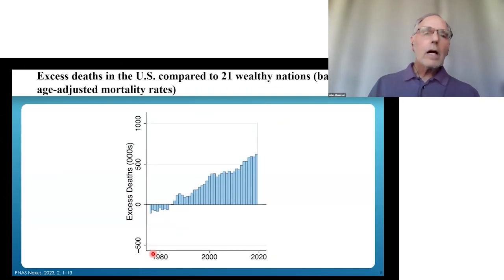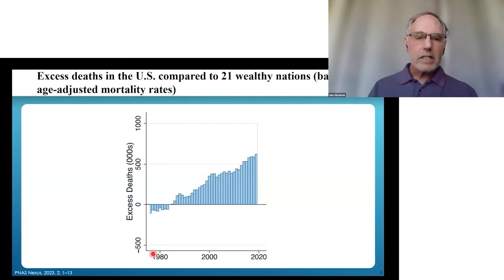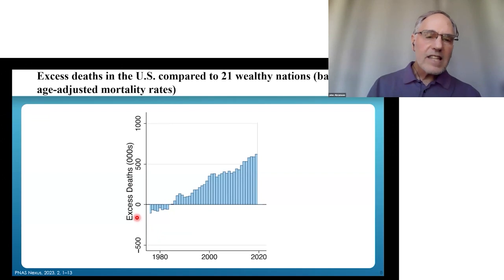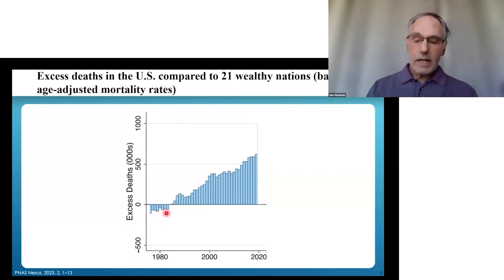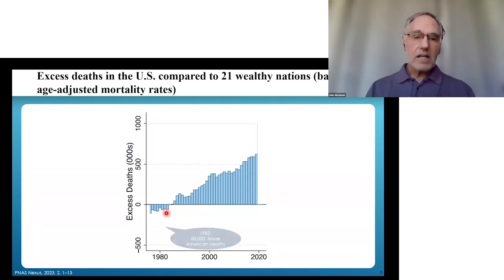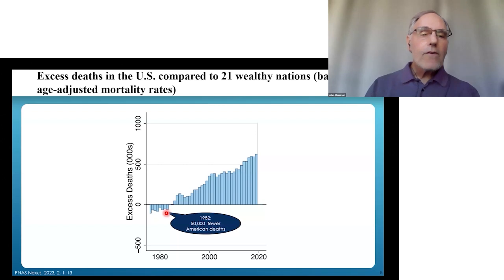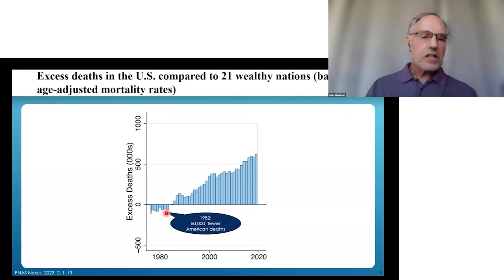Turning to the third way to compare health between countries — age-adjusted mortality rates — this chart covers 1980 to 2020 and shows the excess deaths of Americans compared to citizens of other wealthy countries. In 1980 and the early 80s, Americans were actually doing better; there were fewer excess deaths. In 1982, 50,000 fewer Americans died than would have been predicted by the age-adjusted mortality rate of the other countries.